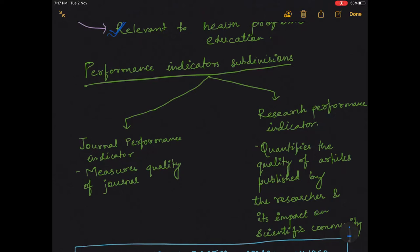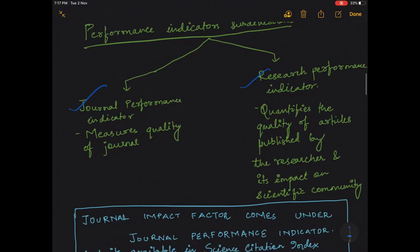Now the performance indicators have got subdivisions like journal performance indicator and research performance indicator. The journal performance indicator measures the quality of the journal, whereas the research performance indicator quantifies the quality of articles published by the researcher and its impact on the scientific community.